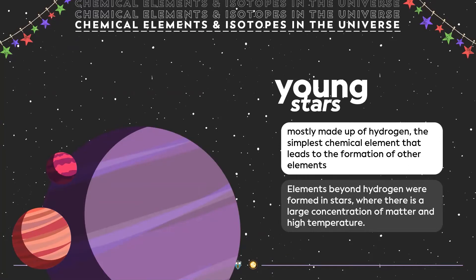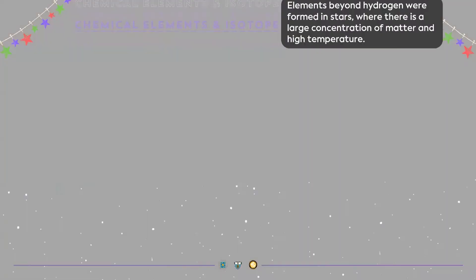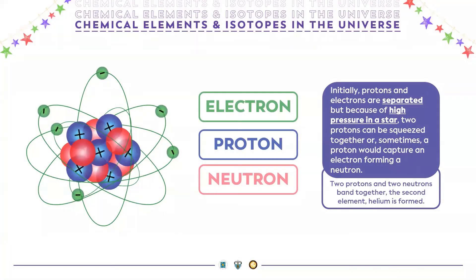Initially, protons and electrons are separated, but because of high pressure in a star, two protons can squeeze together, or sometimes a proton will capture an electron forming a neutron. For example, two protons and two neutrons band together — the second element, helium, is formed. During the explosion, other elements were created, and after the explosion, the chemicals in space combine with each other to form ions and molecules.